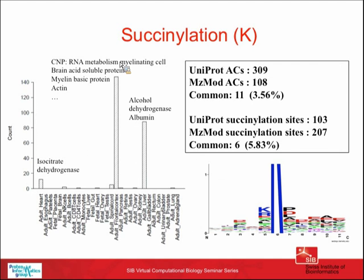Another notable modification on lysine showed a mass shift of ~100 Daltons with a clear peak occurring in both liver and frontal cortex. We detected succinylation on alcohol dehydrogenase, predominantly found in liver—not annotated in UniProt—and on albumin where it is annotated but found only in liver. It was also found on brain proteins, each requiring detailed validation.